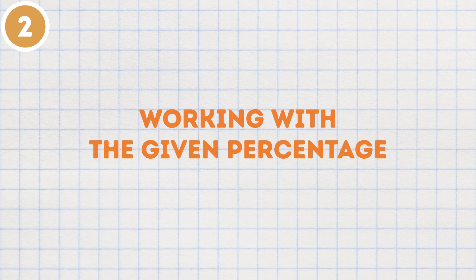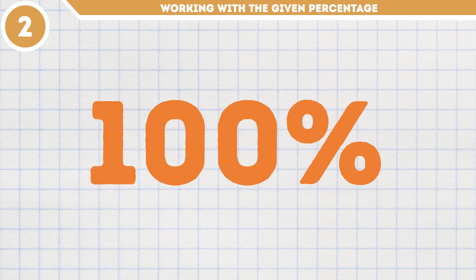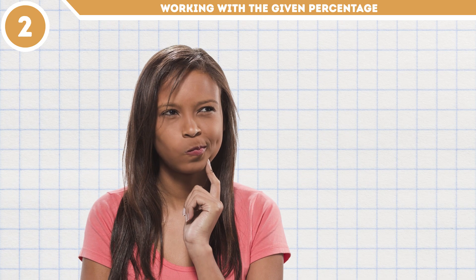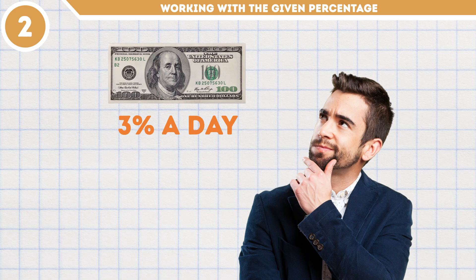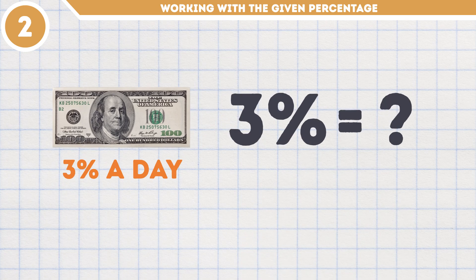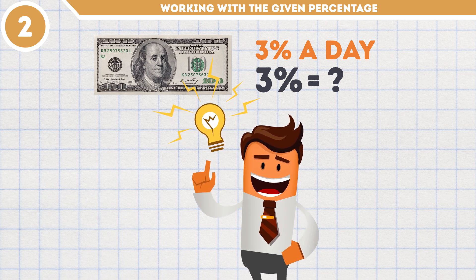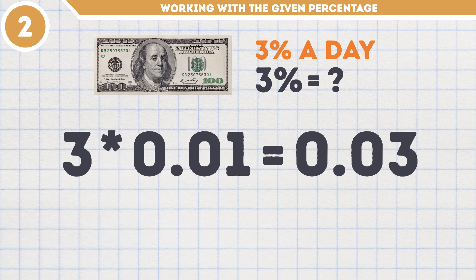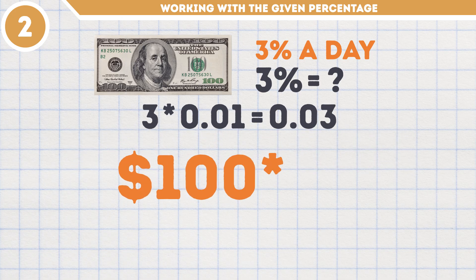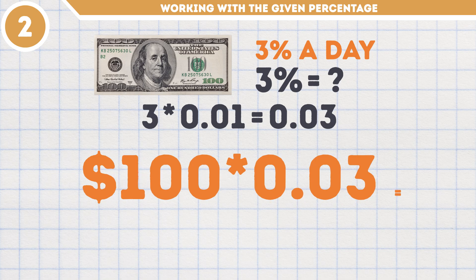Method number 2: Working with the given percentage. Let's say you know the percentage of something but you don't know the numerical value. Just imagine if you borrowed $100 from a friend, and he's going to charge you an interest rate of 3% a day — some kind of friend, right? More like a loan shark. So exactly how many dollars is this 3%? To solve this, you need two simple multiplications. First, multiply 3 by 0.01, which is 0.03 — that's 3% in its decimal form. Then multiply the $100 you borrowed, which makes 100% in this case, by 0.03. In the end, you're paying $3 a day in interest.